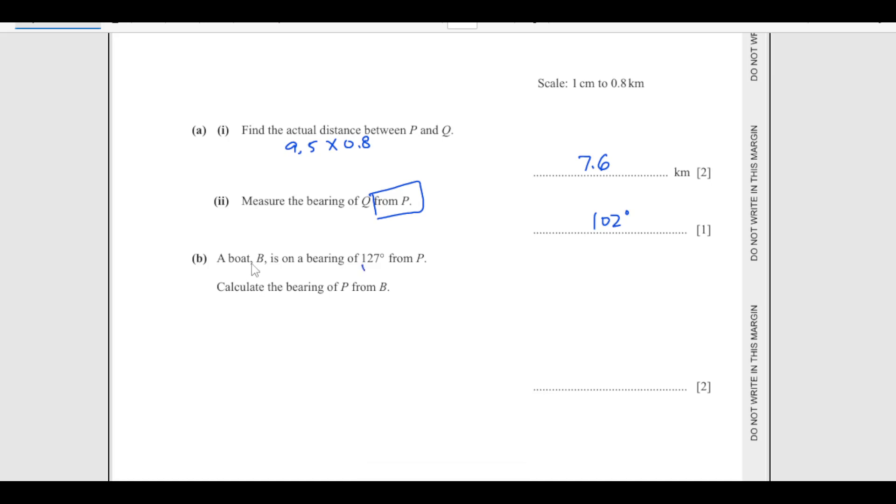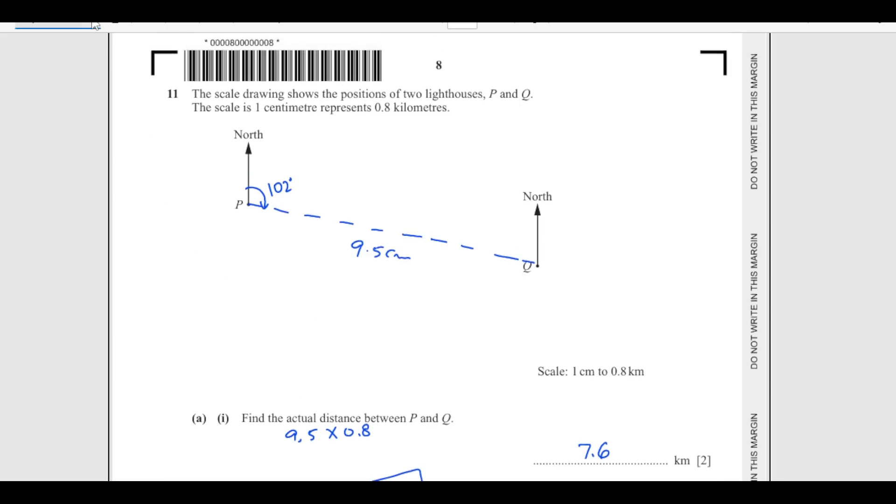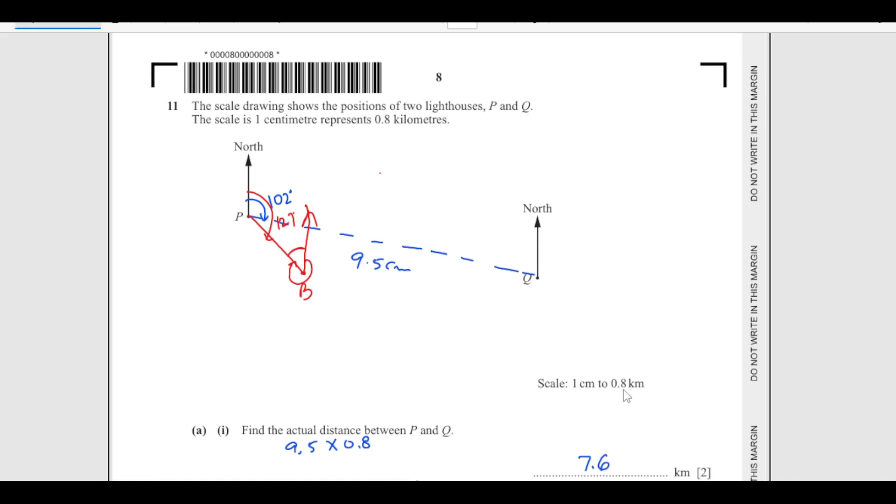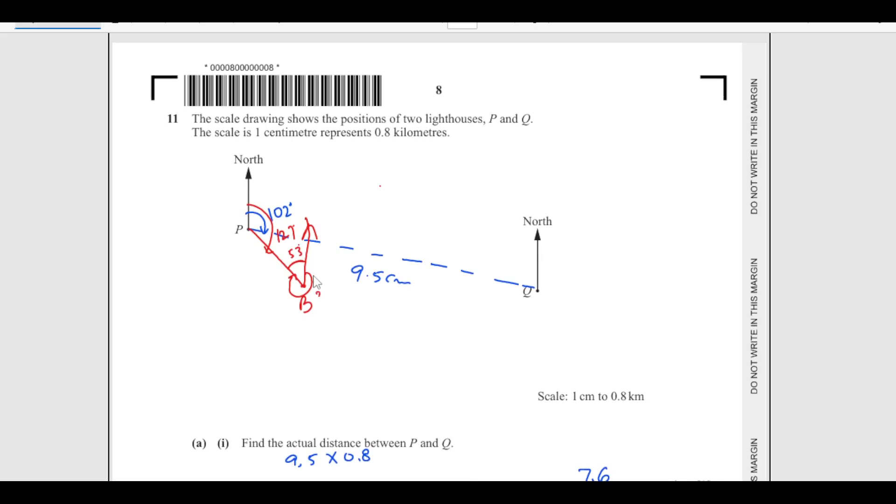B is on bearing of 127 from P. Calculate the bearing of P from B. Now we are looking from B at bearing of 127. We have a point B which is at angle of 127 from here. Let's say this is point B, this is 127, this total angle. Then we are looking for this bearing. We will draw a perpendicular line here, we are looking for this angle. This angle is 180 minus 127, this is 53. Once we got 53, then we will subtract it from 360. We got 307. This angle is 307. This angle we got 53, so this outer angle is going to be 307 which we are subtracting from 360.